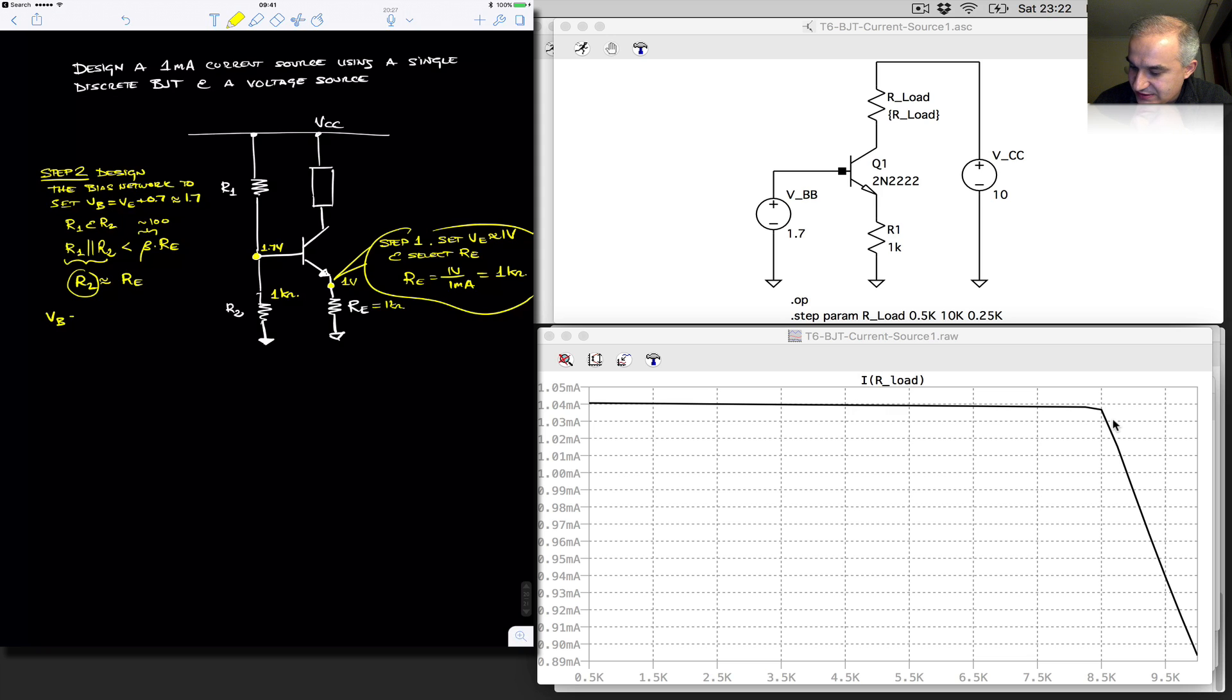So the voltage at the base is equal to R2 over R2 plus R1 times VCC. Or I want 1.7 volts, R2 is set at 1k, 1k plus R1 times 10 volts, assuming that we set this as 10 before, and we choose for R1. So I'm going to do something like around 5k.